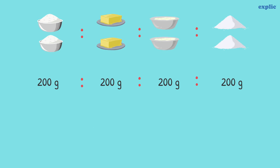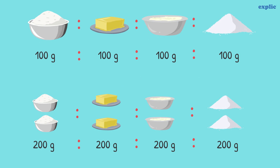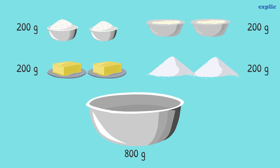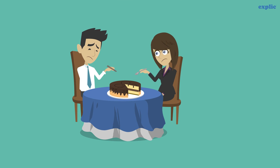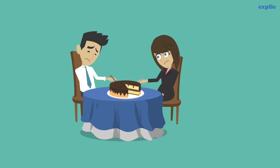Hence, the ratio of the ingredients is still the same. We can say that the weight of the ingredients for a 400g cake and the weight of the ingredients for an 800g cake is in proportion. What will happen if we don't maintain the ratio, and take 300g of sugar instead of 200g? The cake will be too sweet, isn't it?